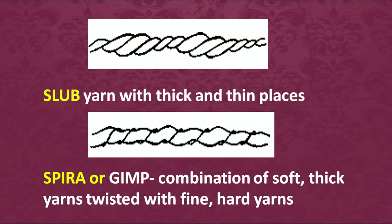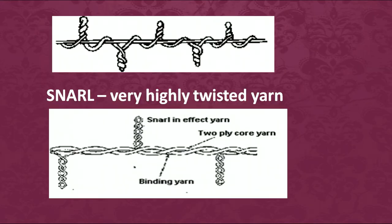Differences can also be achieved by introducing differently colored fibers, giving yarn different colors at different points for an interesting look. Examples of complex and novelty yarns include slub yarn — alternately thick and thin in different places — and jimp (or spider) yarn — a combination of soft thick yarns twisted with fine and hard yarns. Snarl yarn uses very high twist and is used when a very strong yarn is needed, producing tight twists with little snipping coming out.